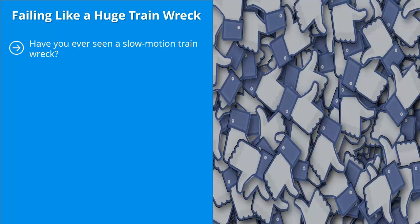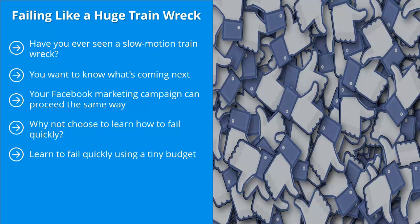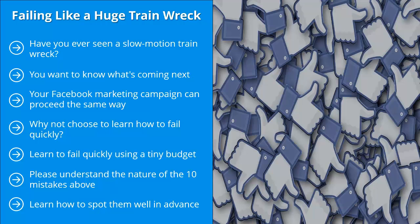Mistake ten: failing like a huge train wreck. Have you ever seen a slow-motion train wreck? Your Facebook marketing campaign can proceed the same way — you know the campaign is failing but can't quite put your finger on the cause, so you just go through the motions. Instead, choose to learn how to fail quickly. Since you're not going to make 100% of your shots, learn to live with this fact and move on. Use a tiny budget so you can run many different experiments; even if the vast majority are failures, you only spent a small amount figuring out winning ads. Understand the nature of these 10 mistakes, learn to spot them well in advance, and prepare a plan B.